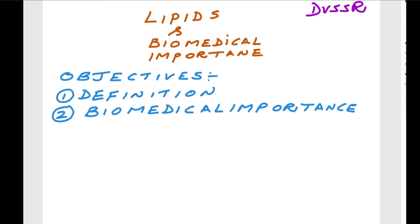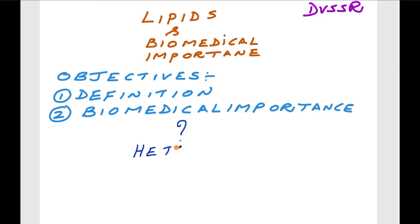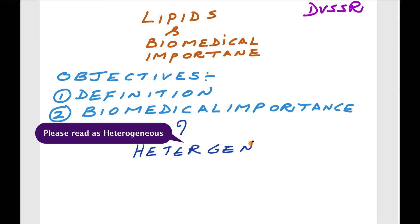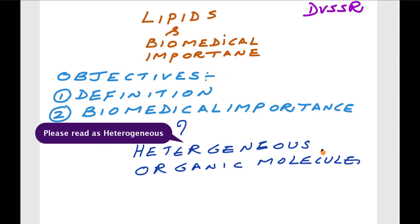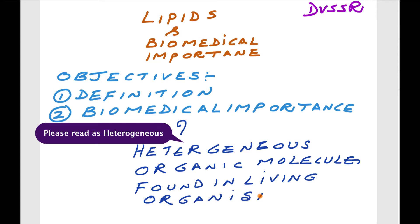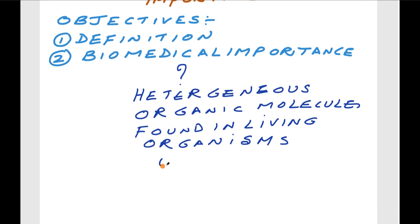What are lipids? Lipids are a heterogeneous group of substances — many different types are present. They are organic molecules found in living organisms, and they are utilizable by living systems, with diverse functions — a wide variety of functions as far as lipids are concerned.